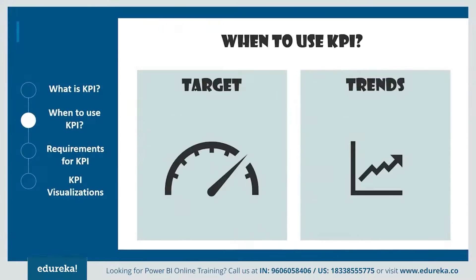So when should you use a KPI? KPIs mainly answer two questions: first, what am I ahead or behind on — this specifically refers to a number, which is your target — and secondly, how far ahead or behind am I, which represents a trend related to the target.